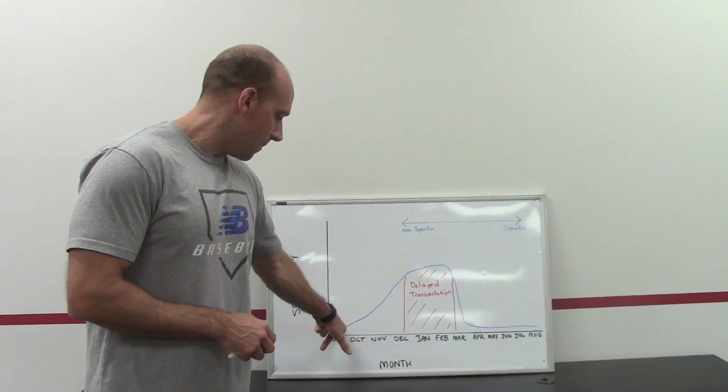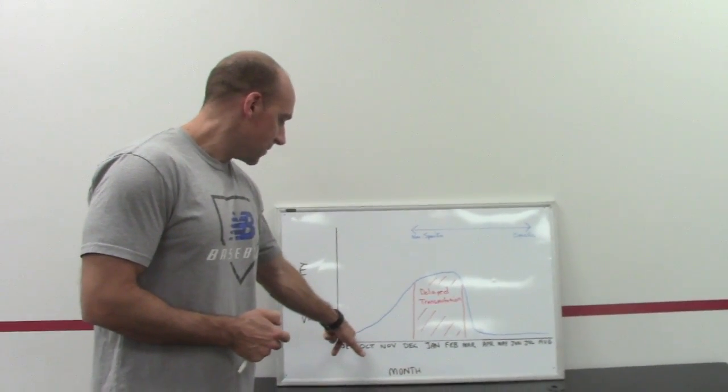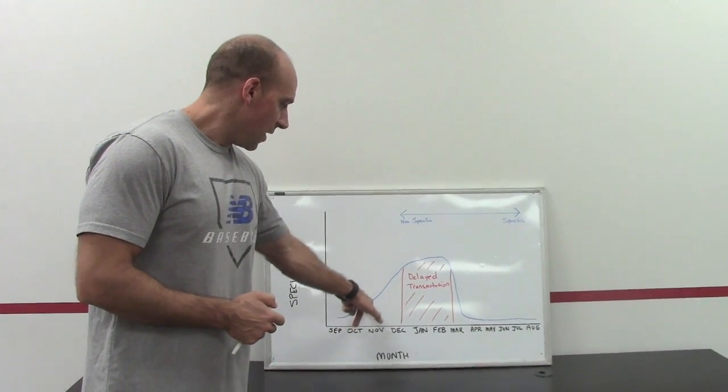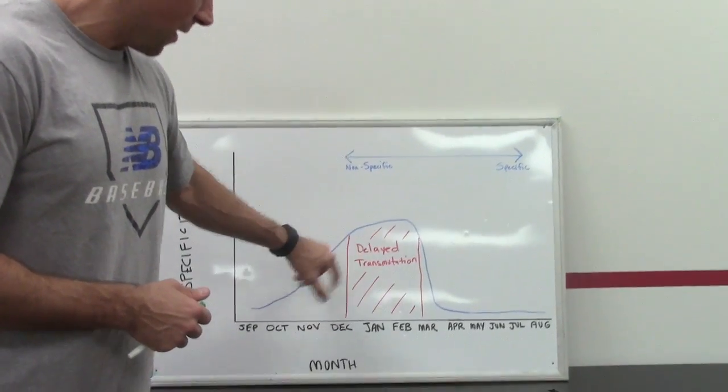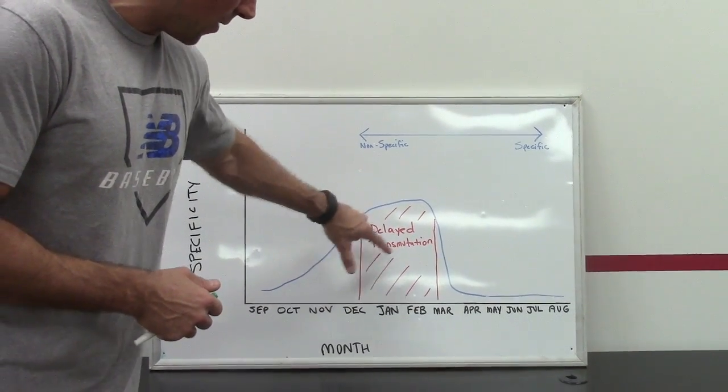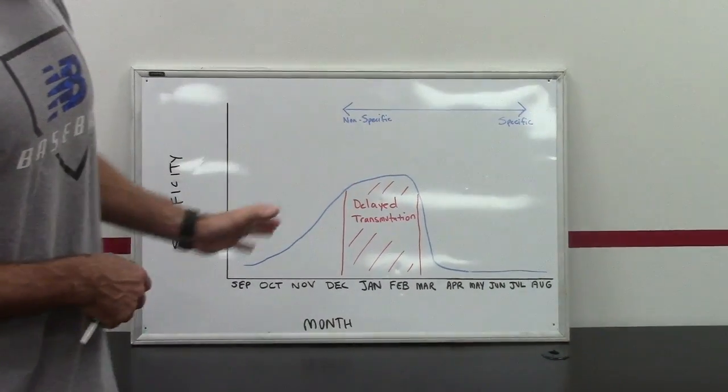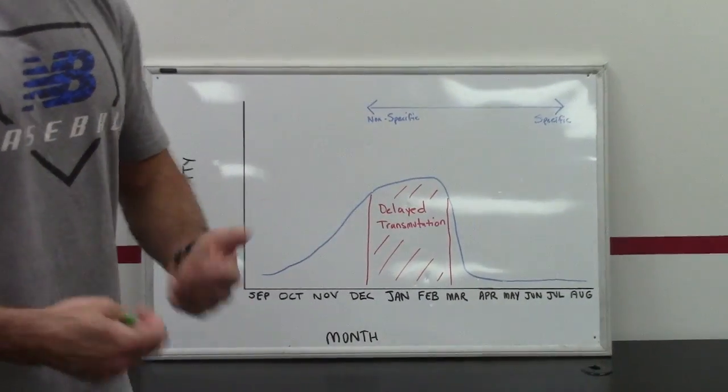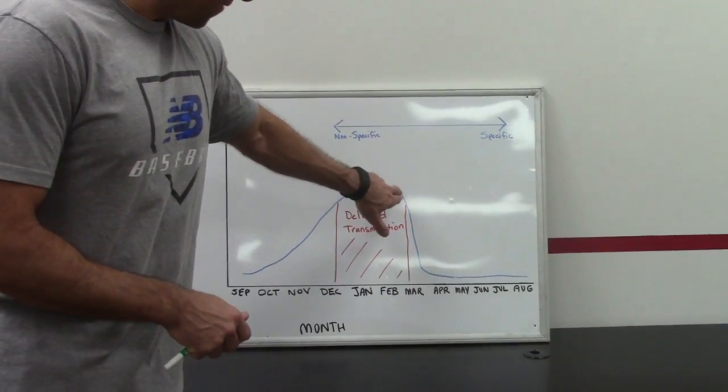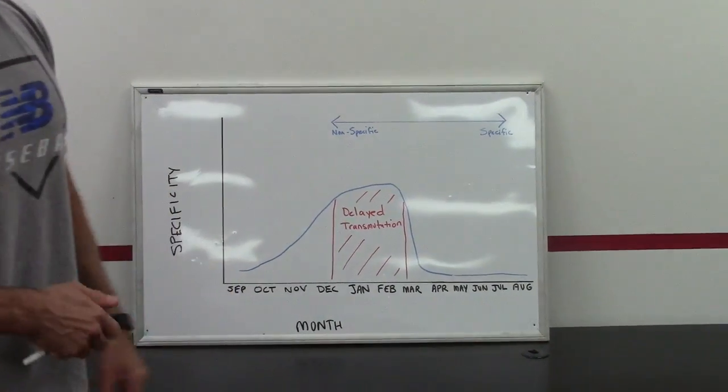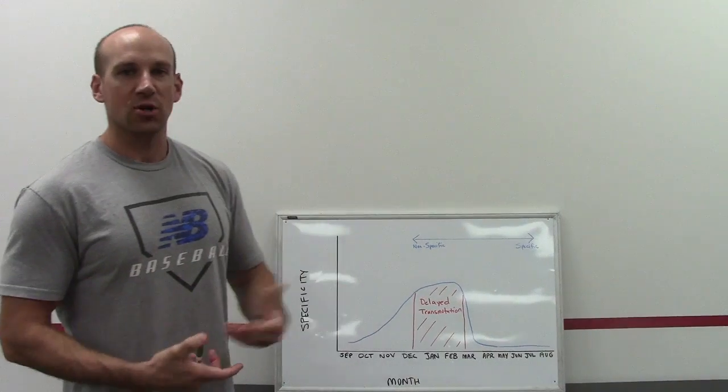So if we're looking about the amount of specificity in our training, it's probably going to be the lowest in the September and October period and it's going to start to ramp up as guys start to throw in November or December and obviously they peak where maybe it's not just long toss and weighted balls here, maybe it's a lot more mound work, things along those lines. And then what's going to happen in our supplemental training is once these guys report in February or March for spring training, what's going to effectively happen is we're going to drop off the amount of specific training because they're already getting plenty of that work in their actual sport participation.